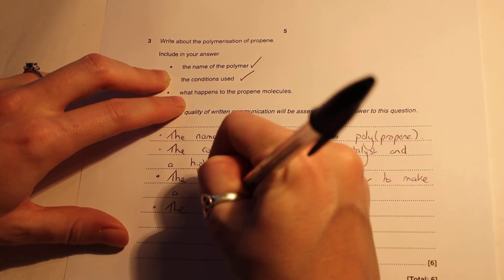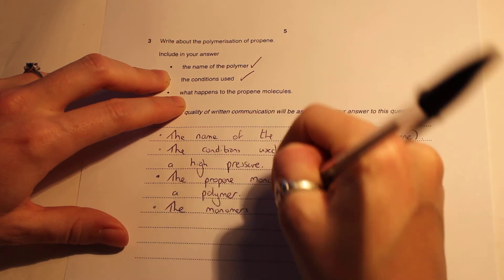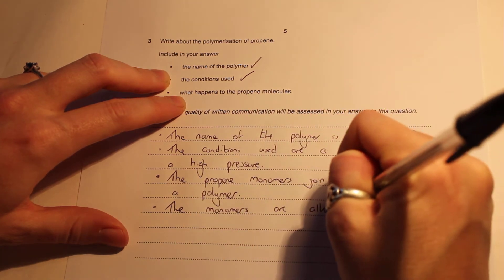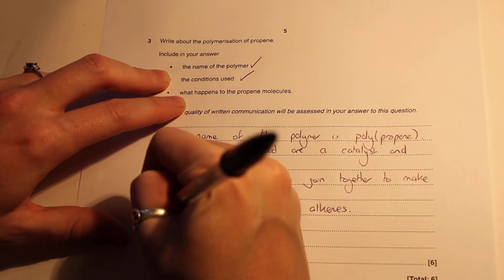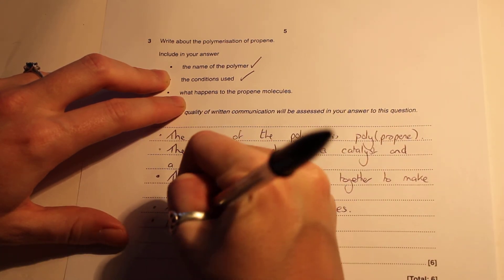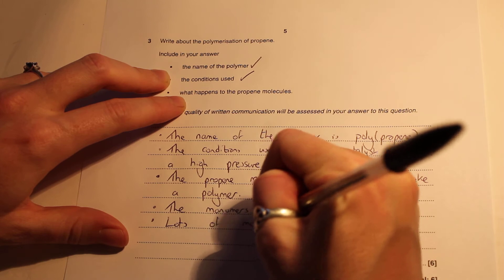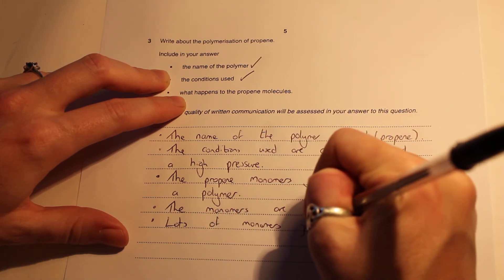So you can see we've not written huge amounts there, but that gives us all the parts. The monomers are alkenes, and the last point, lots of monomers join to make a polymer.